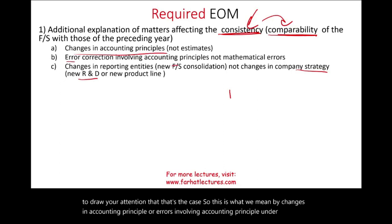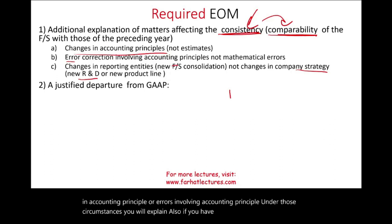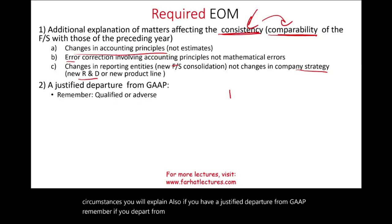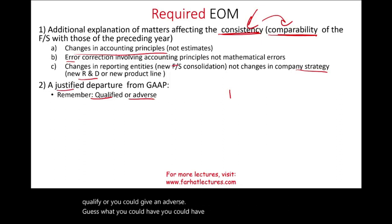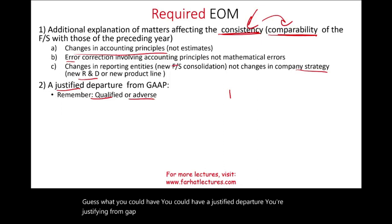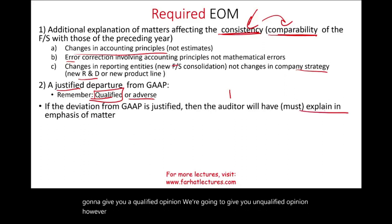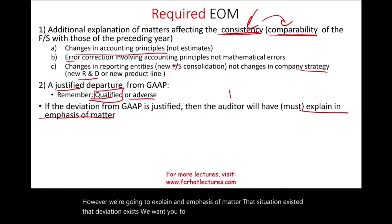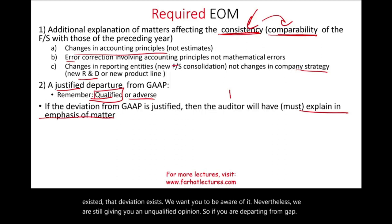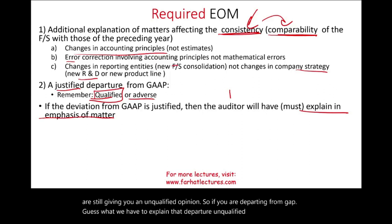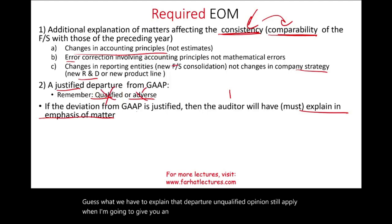Also required: if you have a justified departure from GAAP. Remember, if you depart from GAAP you normally give a qualified or adverse opinion. However, you could have a justified departure that the auditor finds acceptable — in which case we still give an unqualified opinion, but we explain in an emphasis of matter paragraph that the deviation exists and we want users to be aware of it. We're still giving an unqualified opinion, but we are required to explain the departure.